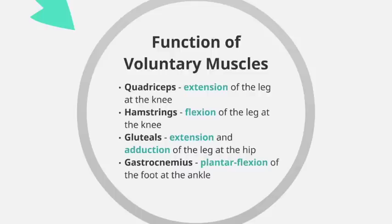The gluteals are responsible for extension and adduction of the leg at the hip. A good example would be a sprinter: when running 100 metres, the gluteals drive the legs backwards, causing that extension at the hip. Finally, the gastrocnemius is responsible for plantar flexion — pointing the toes, which causes an extension-like movement of the foot at the ankle. A good example would be a ballet dancer on tiptoes as they move around.